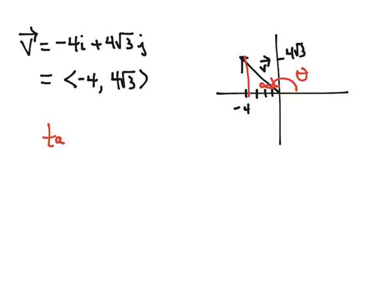And the tangent of alpha would be equal to 4 square roots of 3 divided by 4. Notice that for my reference triangle, I ignored the negative, which is equal to the square root of 3.